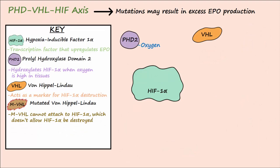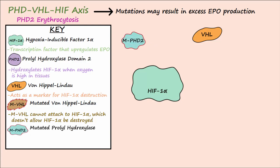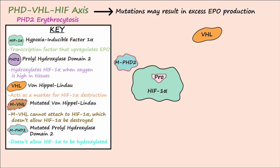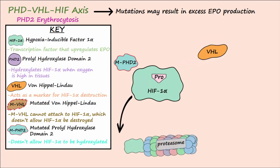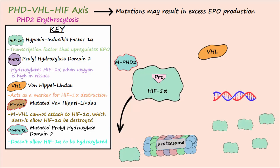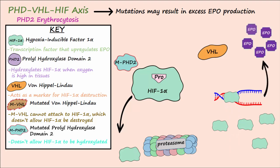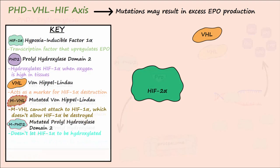PHD2 erythrocytosis is caused by a mutation in PHD2. This mutation doesn't allow HIF-1-alpha to be hydroxylated, and therefore VHL cannot bind to HIF-1-alpha to be marked for destruction. Consequently, HIF-1-alpha levels increase, which in turn causes EPO levels to rise.